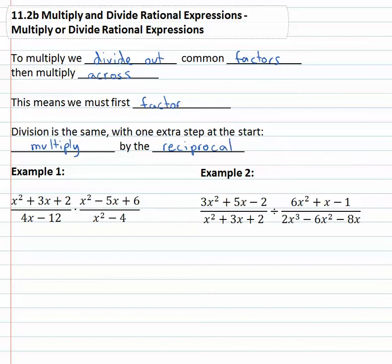So let's see if we can do that to multiply the rational expressions x squared plus 3x plus 2 over 4x minus 12 times x squared minus 5x plus 6 over x squared minus 4.